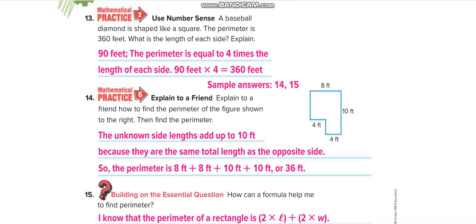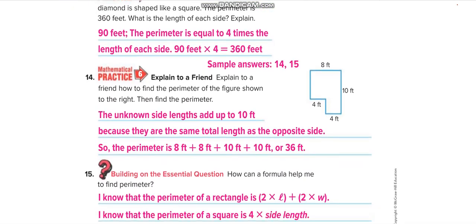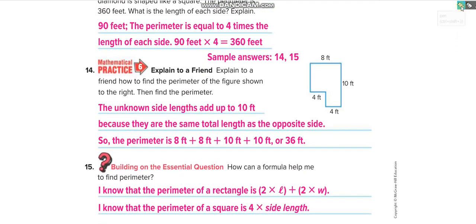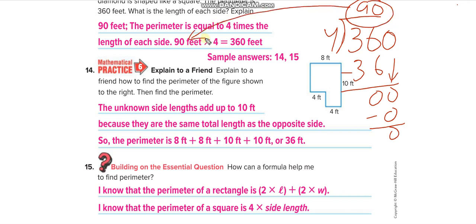A baseball diamond is shaped like a square. The perimeter is 360 feet. Since it is a square, divide 360 by the number of sides, which is 4. 360 divided by 4: four times 9 equals 36, bring down the zero, four times zero is zero — so the answer is 90. Each side of the baseball diamond is 90 feet.